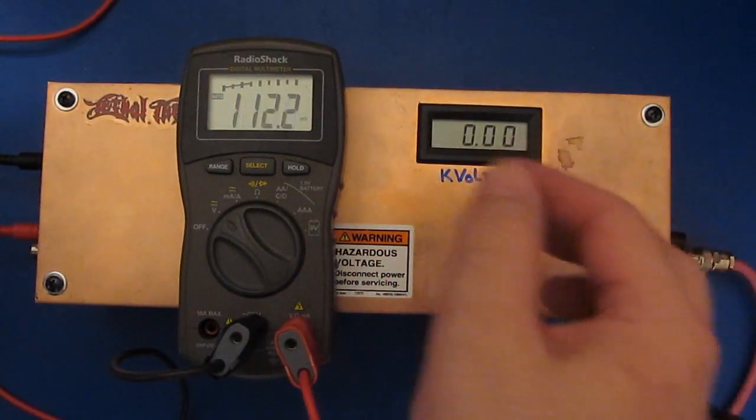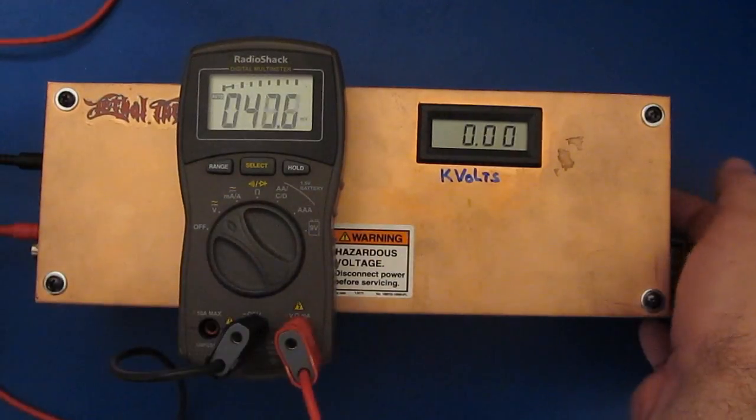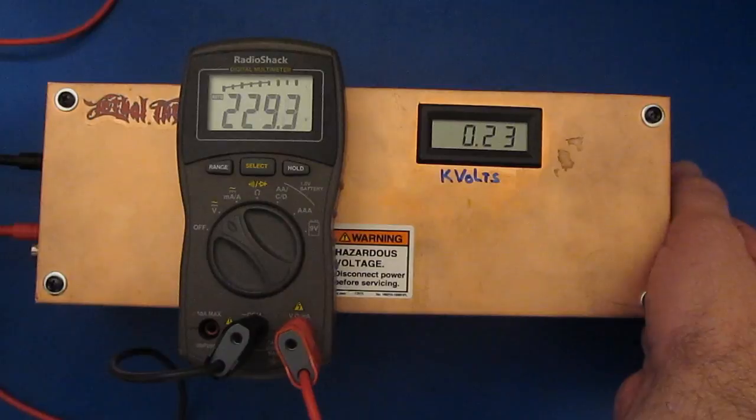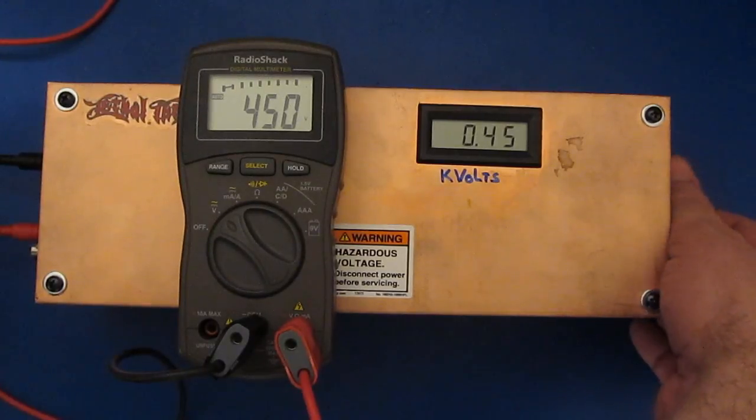Okay before we give it an ESD pulse, let's just see how it handles some DC voltages. So for this test we'll just be using the DC output of our ESD gun. This should be roughly 230 volts. And again the meter on this is not all that accurate.